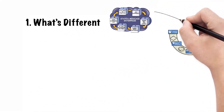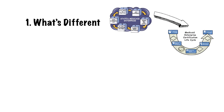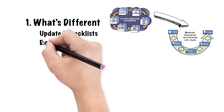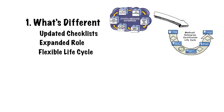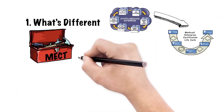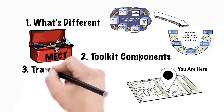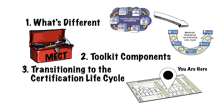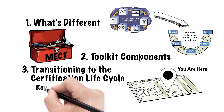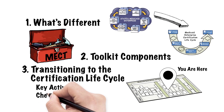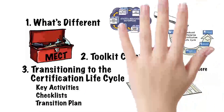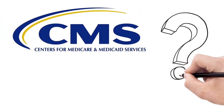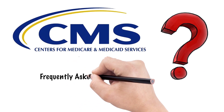To recap: in Section 1, we reviewed the key differences between the 2007 Medicaid Enterprise Certification Toolkit and the updated toolkit, such as updated checklists, the expanded role of the IV&V contractor, and a flexible lifecycle that incorporates milestone reviews throughout development and not just at the end. In Section 2, we toured the toolkit's components. And in Section 3, we examined how the new lifecycle accommodates different styles of modular development, a couple of key activities in the new lifecycle, selecting an appropriate checklist set, and transitioning to the new certification lifecycle. We hope that this video has been helpful, and we encourage you to visit our Frequently Asked Questions page at the Medicaid.gov location shown on the screen.